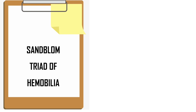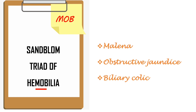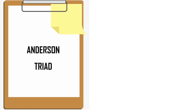Quincke-Blum triad of Hemobilia. The clue to remember this Hemobilia triad is MOB — M-O-B. MOB is also there in the letters of Hemobilia. M for melena, O for obstructive jaundice, and B for biliary colic. So melena, obstructive jaundice, and biliary colic — Hemobilia, MOB.